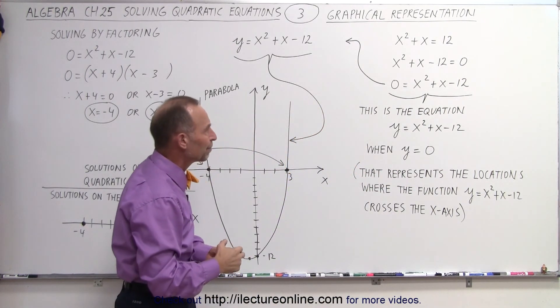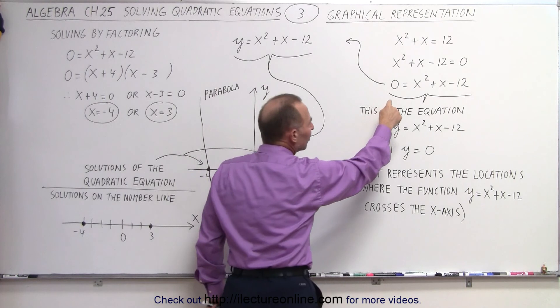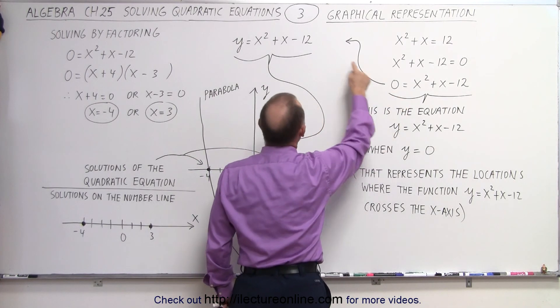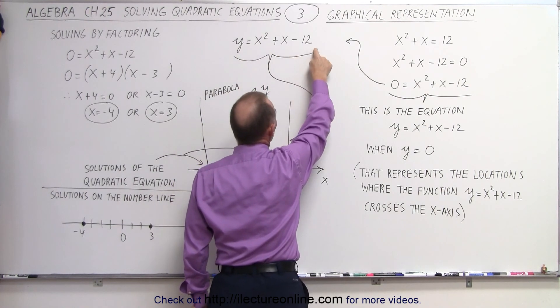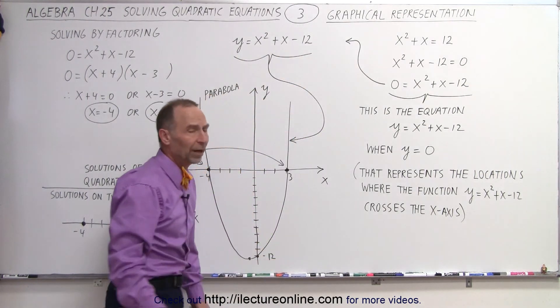But what does that really mean graphically? Well, let's replace the 0 with y. And now we have a function where y depends on x according to this definition, x squared plus x minus 12.